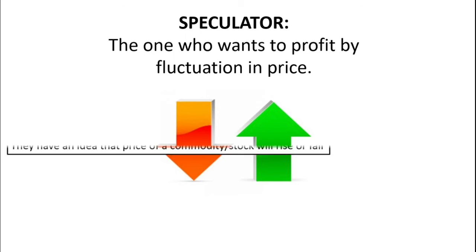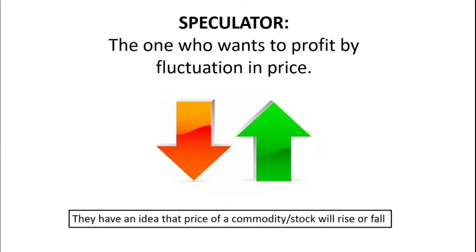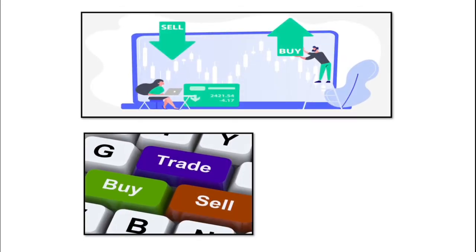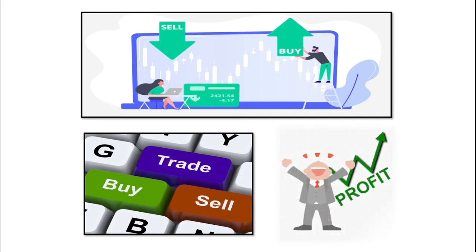Now let's talk about speculation. A speculator is the one who wants to profit from the fluctuation in price. It means he has an idea that the price of a commodity or stock will rise or fall. Therefore, he purchases or sells them at a current price, and then in the near future he sells them at a higher price or buys them at a lower price. The difference earned is his profit.